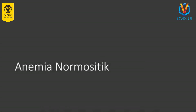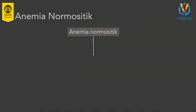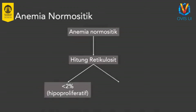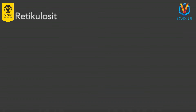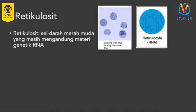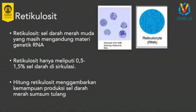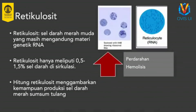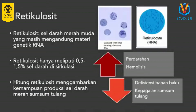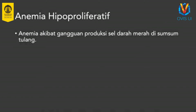Diagnosis anemia normositik. Anemia normositik ditandai dengan MCV yang berada dalam rentang normal atau 80-100 femtoliter. Anemia normositik dapat dibedakan menjadi anemia hipoproliferatif dan hiperproliferatif berdasarkan hitung retikulosit. Retikulosit adalah sel darah merah muda yang tidak memiliki inti namun masih mengandung materi genetik RNA. Retikulosit hanya merupakan sebagian kecil dari sel darah merah yang beredar dalam sirkulasi. Hitung retikulosit secara tidak langsung menggambarkan kemampuan sumsum tulang memproduksi sel darah merah. Peningkatan hitung retikulosit lebih dari atau sama dengan 2% dapat ditemukan pada kondisi perdarahan dan hemolisis yang menunjukkan mekanisme kompensasi untuk meningkatkan produksi sel darah merah.